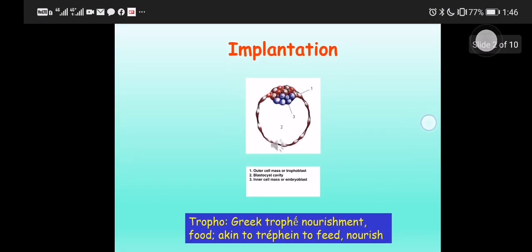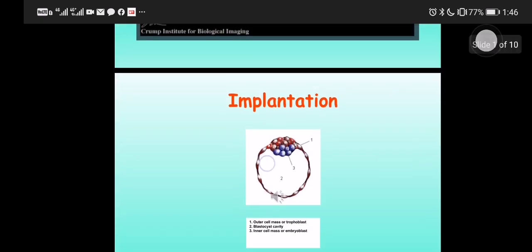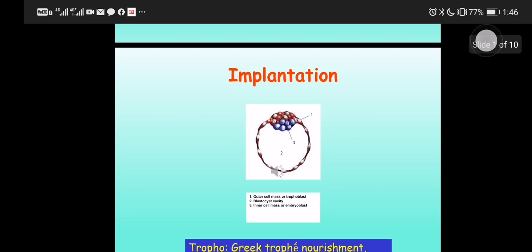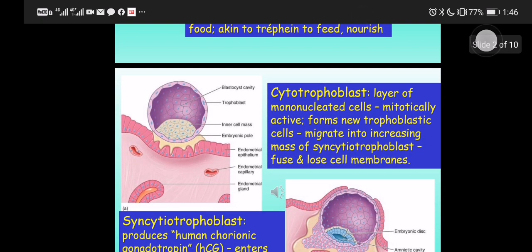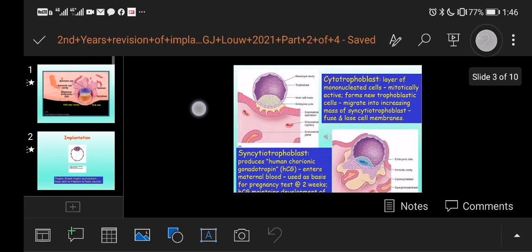And while that occurs, there's something called implantation, where this ball of cells that I call a blastocyst, it implants into the wall of the womb of the mother, called the endometrium.